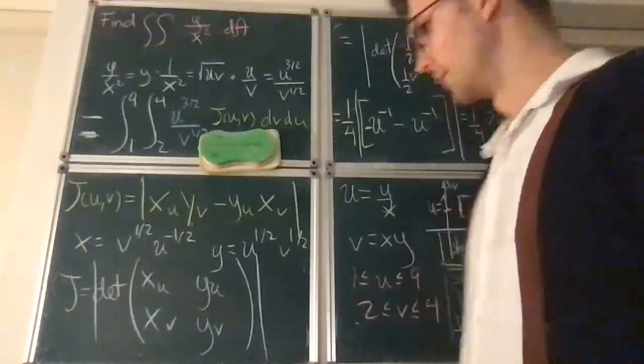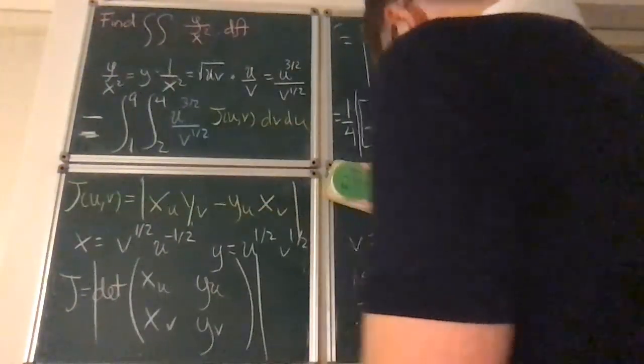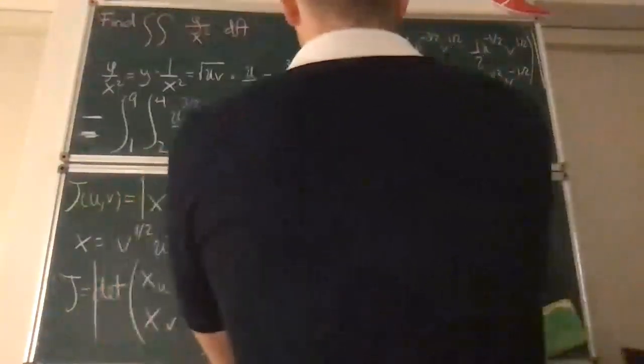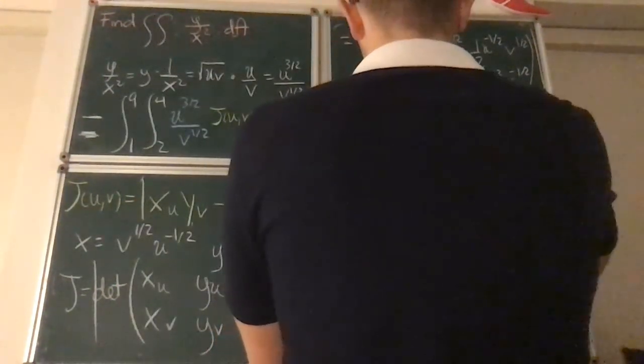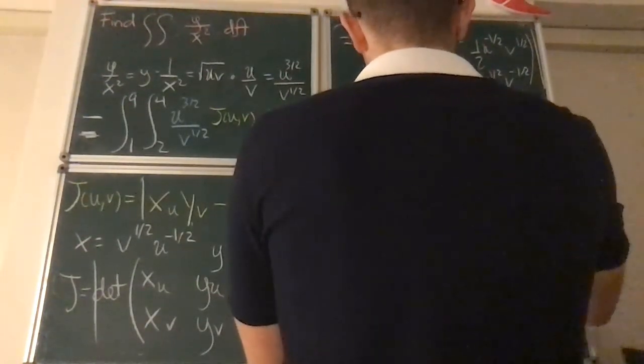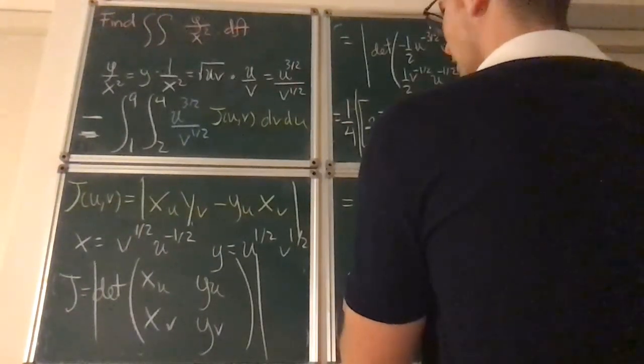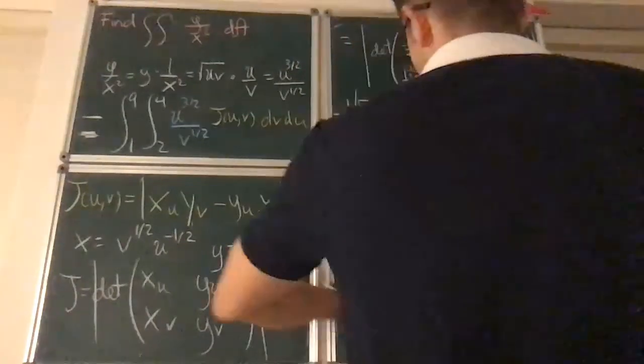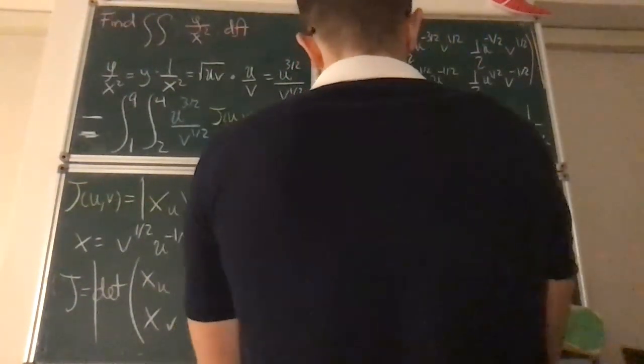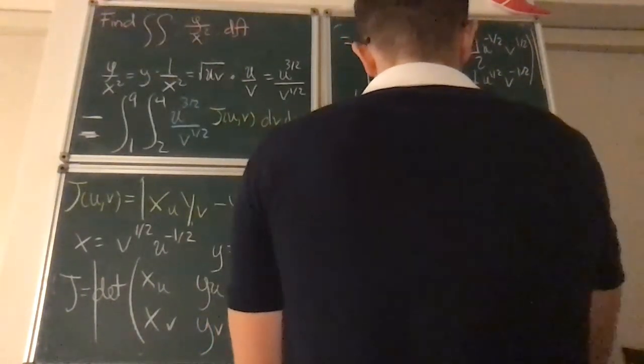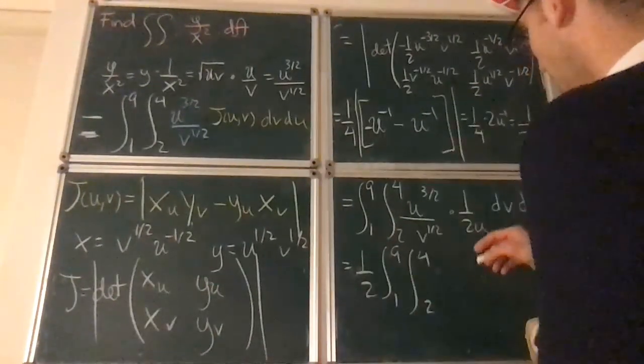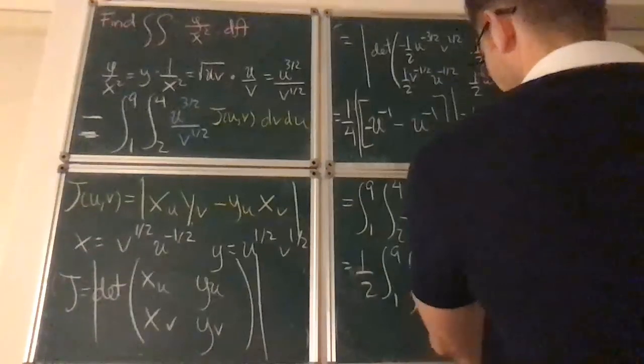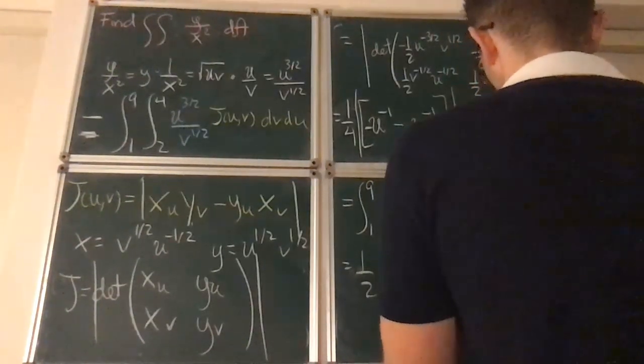OK, so now we found that the value for the Jacobian is 1 over 2 u. We no longer need this. So the integral, we're almost done. The integral we have to do is from 1 to 9, 2 to 4, u to the 3 halves divided by v to the 1 half, times 1 over 2 u, dv du. And basically this gives you 1 half of the integral from 1 to 9 of 2 to 4 of u to the 1 half v to the negative 1 half. It's better to write it this way now. dv du.